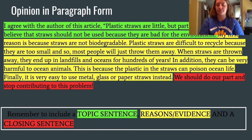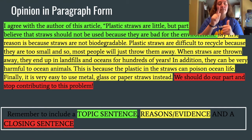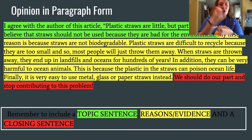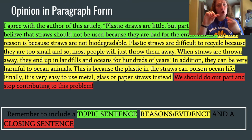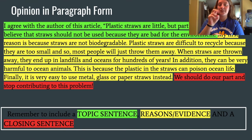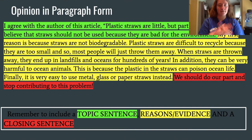I believe that straws should not be used because they are bad for the environment. My first reason is because straws are not biodegradable. Plastic straws are difficult to recycle because they are too small, and so most people will just throw them away. When straws are thrown away, they end up in landfills and oceans for hundreds of years. In addition, they can be very harmful to ocean animals, because the plastic in the straws can poison ocean life. Finally, it is very easy to use metal, glass, or paper straws instead. We should do our part and stop contributing to this problem.